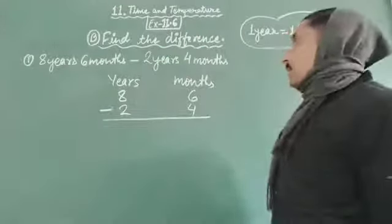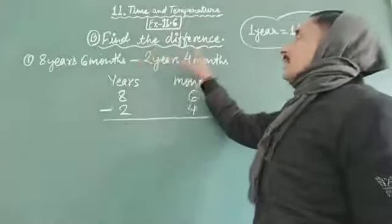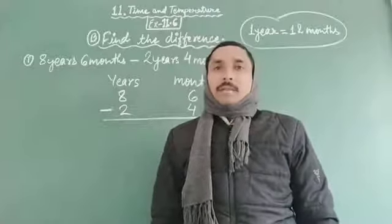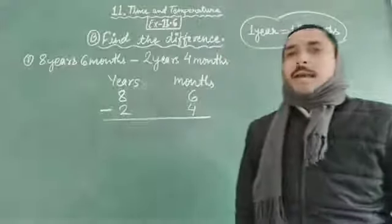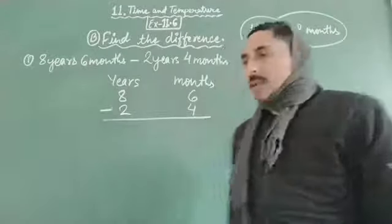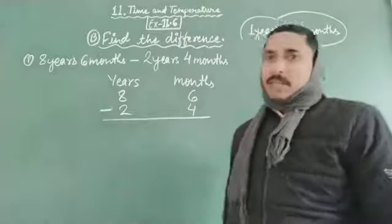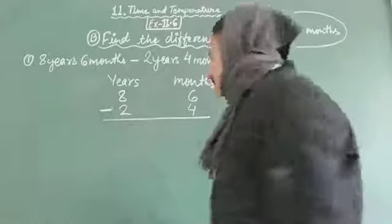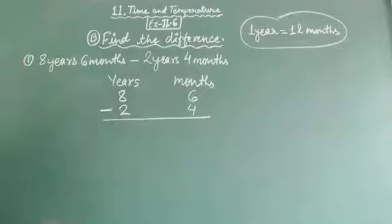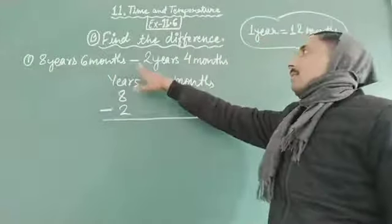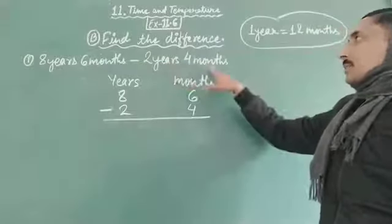So what are we going to learn? Find the Difference — we are going to learn how to subtract the bigger units of time. Today we will learn this. Subtraction and difference mean the same, that means we have to do subtraction. So first of all, let's solve Question Number 1: 8 years 6 months minus 2 years 4 months.